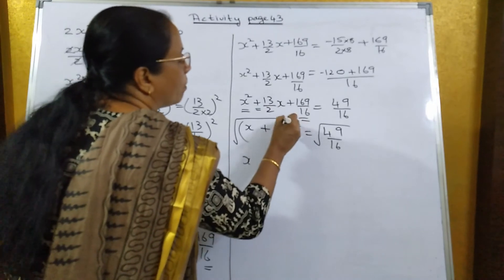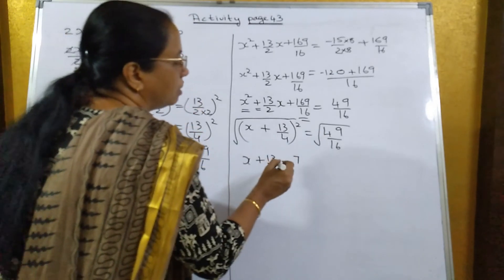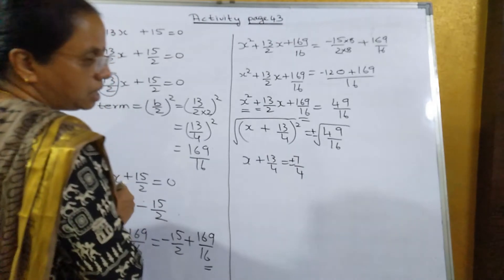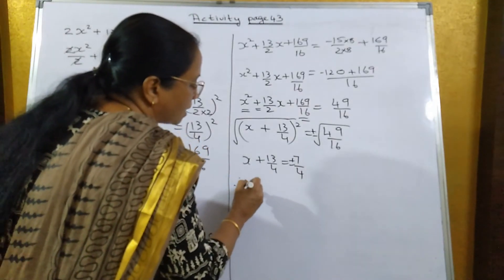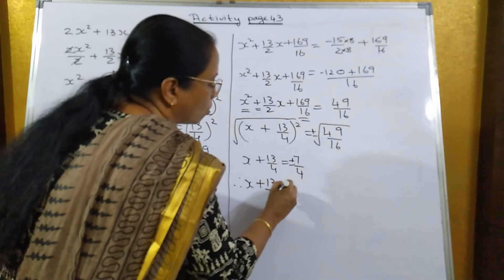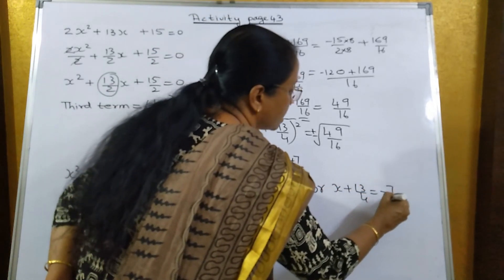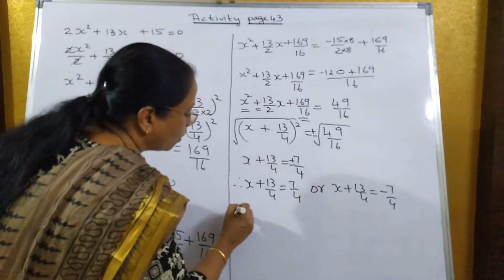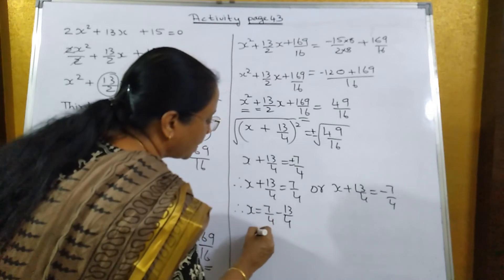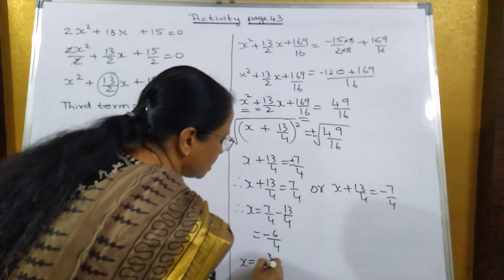Take the square root on both sides. The square will go away and you get x plus 13 upon 4 is equal to plus or minus 7 upon 4 — don't forget the plus or minus. So taking the positive value: x is equal to 7 upon 4 minus 13 upon 4, which equals minus 6 upon 4. So x is equal to minus 3 upon 2.